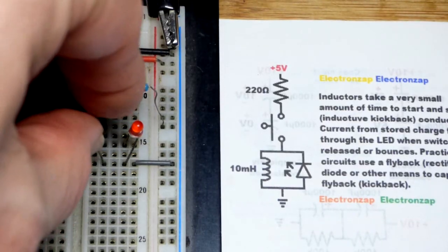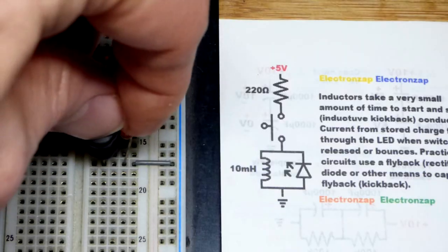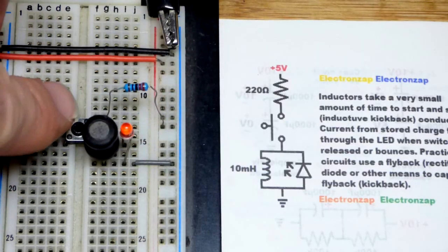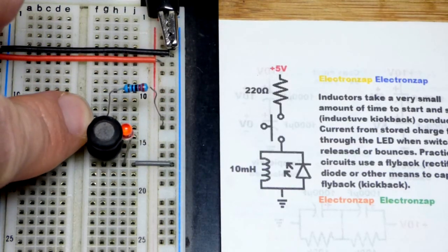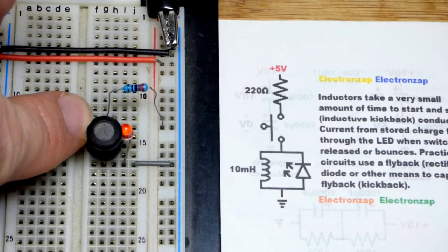When I bring in the inductor now, the inductor will conduct when I close the switch, but the diode won't. And the thing is, when I release the switch, you're going to see the LED flash right there. It's kind of covered by the inductor.